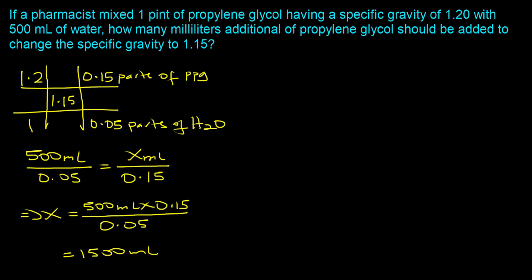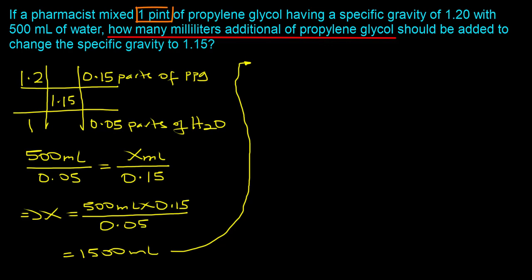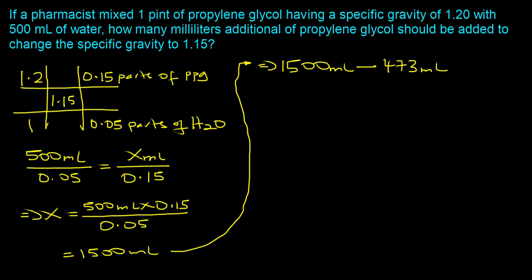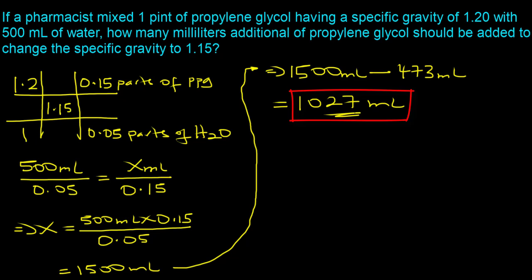We now have the total volume of propylene glycol needed to mix with 500 milliliters of water. But the question asks for the additional propylene glycol, since we originally started with one pint. One pint equals 473 milliliters, so we calculate 1500 minus 473, which gives us 1027 milliliters — the volume of additional propylene glycol needed to achieve a specific gravity of 1.15.